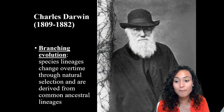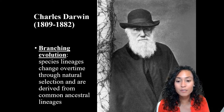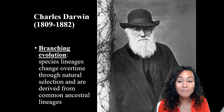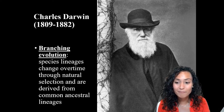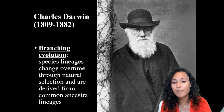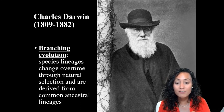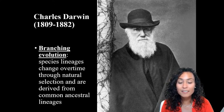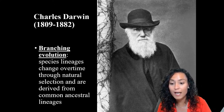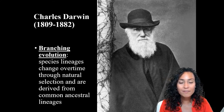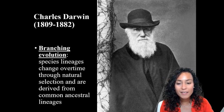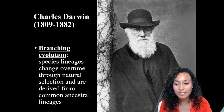Hi everybody. We've been shaping archaeological theories about the antiquity of humanity. In this model of branching evolution, in the origins of species, Darwin proposed the idea that species lineages change over time through natural selection and are derived from a common ancestral lineage.